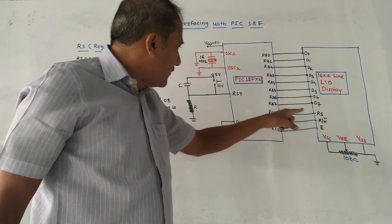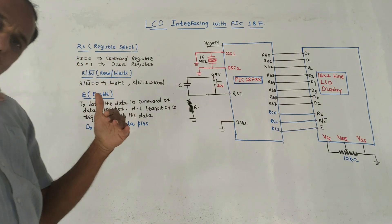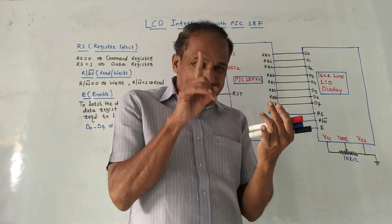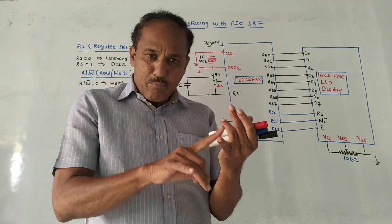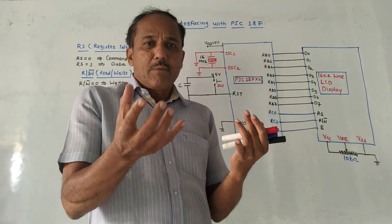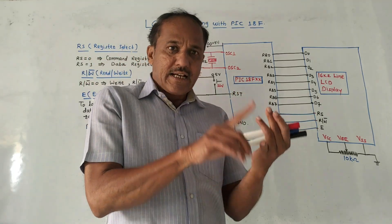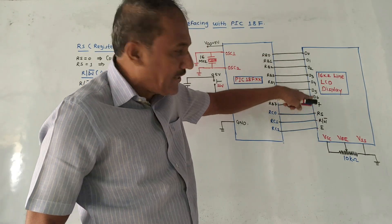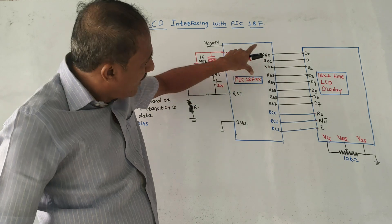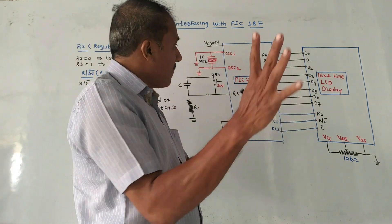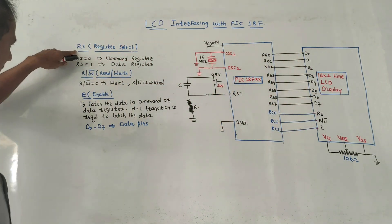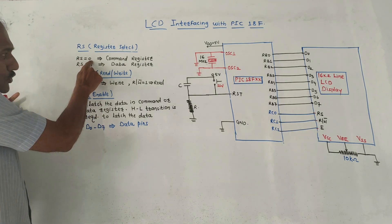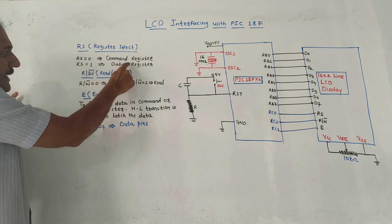Now let us talk about these three pins. First is RS, that is the register select pin. There are two types of key important registers as far as LCDs are concerned: one is the command register, another is the data register. As the name indicates, command register is used for providing different commands to the LCD — for example, whether to read data or write data. Whereas data register is used when we want to write some data to display. If RS equals zero, command register is selected; if RS equals one, data register is selected.